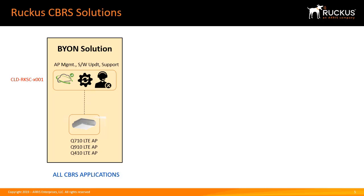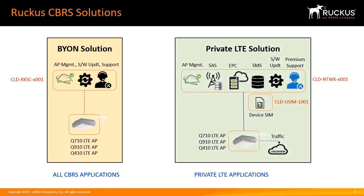Ruckus is initially offering CBRS in two general options. In the Bring Your Own Networks solution, BYON, Ruckus will sell LTE APs and AP management licenses. This option supports all CBRS applications, but the customer will be responsible for providing their own spectrum access system, Evolve Packet Core, SIM subscriber management system, and SIMs for client devices and LTE devices. The second option is an all-inclusive private LTE solution, where Ruckus will provide the entire CBRS architectural components — a one-stop shopping experience with its own SKU.